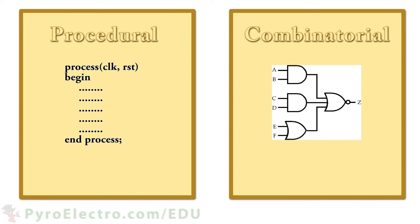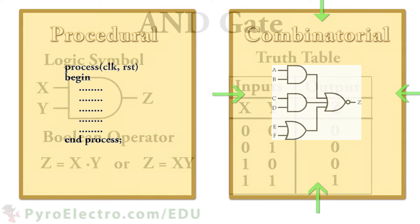In the world of CPLD and FPGA, there are two types of logic that we use: procedural and combinatorial. Over the next two lessons, we will explore what these two types of logic are and how to implement them in a CPLD. In this lesson, we'll start by learning about combinatorial logic.